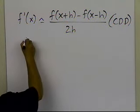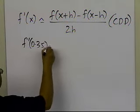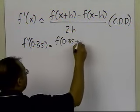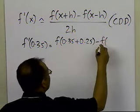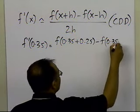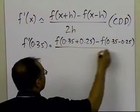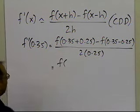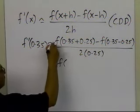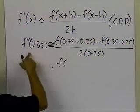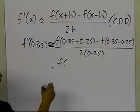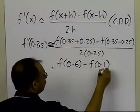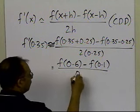I want to calculate f'(0.35), and the starting value of h is 0.25. So we compute [f(0.35 + 0.25) − f(0.35 − 0.25)] / (2 × 0.25), which means I need to calculate the value of the function at 0.6, minus the value of the function at 0.1, divided by 0.5.